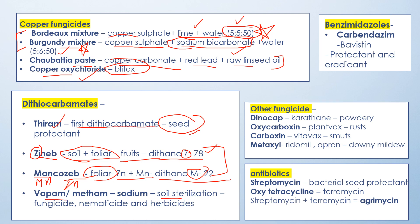This is used for soil sterilization, and it is also a fungicide and nematicide. You may have exam questions on soil sterilization. Zineb can be asked — how to apply it. Zineb is applied to the soil as well as as a foliar spray. This is the information you should remember.